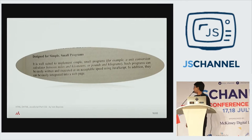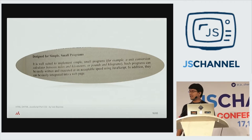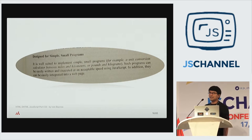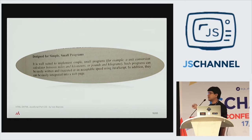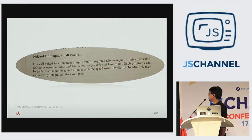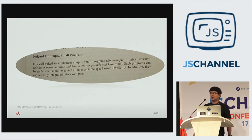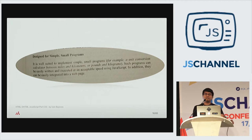This is a quote from that old 15-year-old book. The author says JavaScript is 'well-suited to implement simple, small programs,' giving the example of a unit conversion calculator between miles and kilometers, or pounds and kilograms. He also notes such programs 'can be easily written and executed at an acceptable speed using JavaScript.' The key thing: it wasn't designed for anything big and wasn't expected to perform.